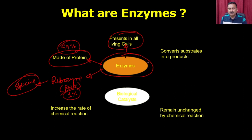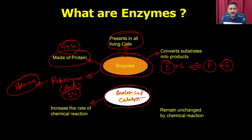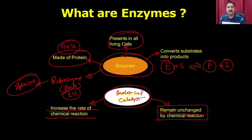Enzymes are converting the substrate into the product. The enzymes are going to interact with the substrate and that is how they are actually going to form the product, and the enzyme is going to be released. Because it is a biological catalyst, it is not going to participate in the reaction - it is only going to facilitate the reaction. As a biological catalyst, they are increasing the rate of chemical reactions, but they are going to remain unchanged after the chemical reactions.